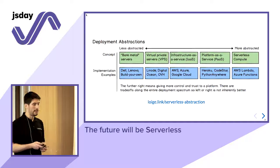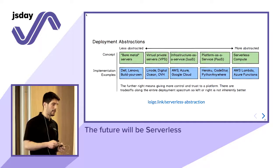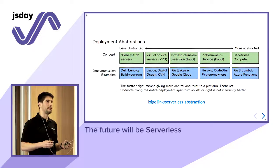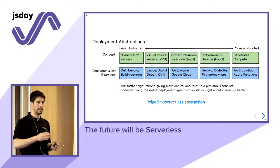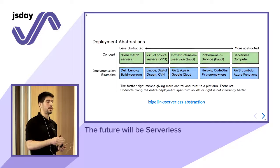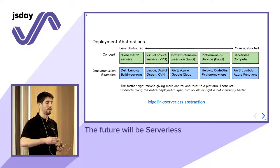There is an interesting perspective from Matt MacKay, where he describes serverless as the new level of abstraction. We constantly build abstraction layers as developers. The very first was bare metal, where you had to do everything. Then we piled on layers: virtual private servers, infrastructure as a service, platform as a service, and now serverless.